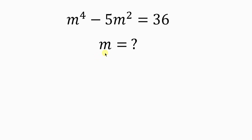Let's solve for all values of m, given that m to the 4th minus 5m squared is equal to 36. I'm going to be using two methods to solve this question, so I'll start with method 1.